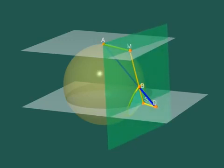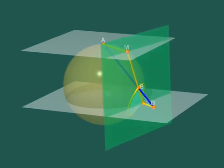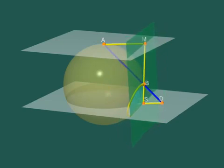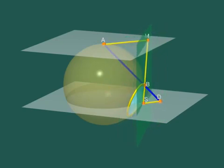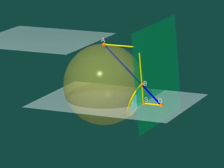When B moves along the yellow circle, the segment BS keeps tangent to the sphere. Its length is therefore constant. Since BS and DS have the same length, the moving segment DS also retains a constant length.